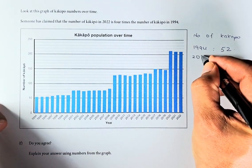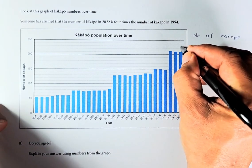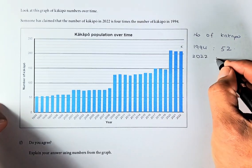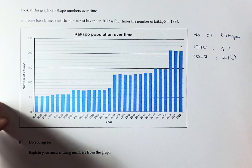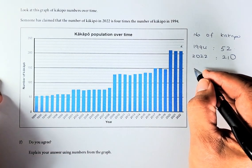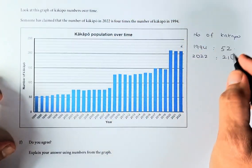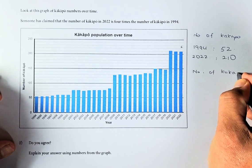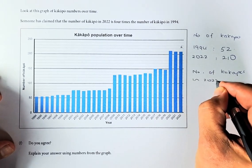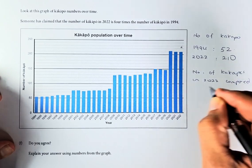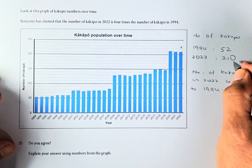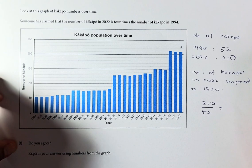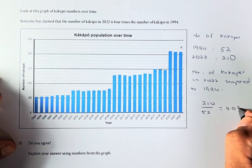How about 2022? If you look at it, it's going to be 200 and a bit more. One more line is 10, so the answer is going to be 210. To get the number of Kakapos in 2022 compared to 1994, we take 210 divided by 52. If you put that in a calculator, the answer is going to be 4.038.